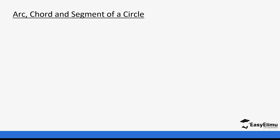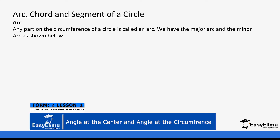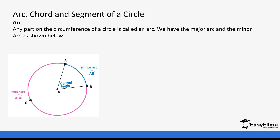First, we are going to recap what we covered before: what is an arc, chord, and segment of a circle? Remember when we looked at the area of a circle, we mentioned some of these definitions. An arc is any part of the circumference. We have the major arc and the minor arc — the blue line is the minor and the pink line is the major. These lines on the circumference of a circle are referred to as arcs.